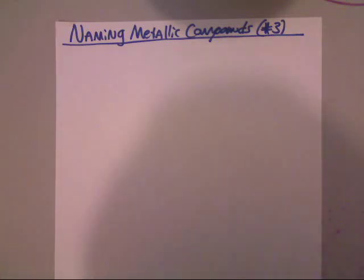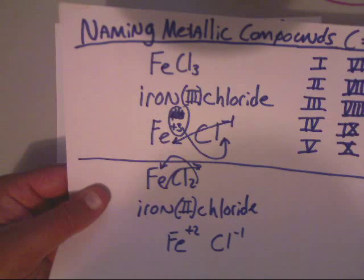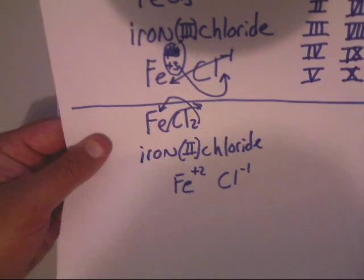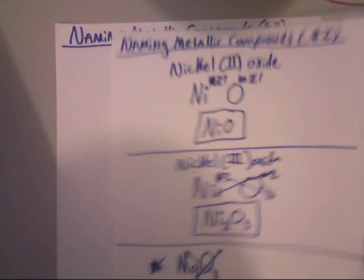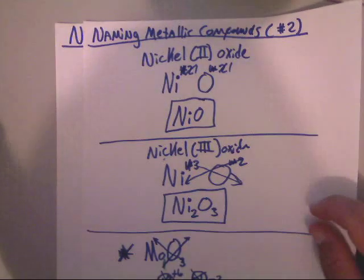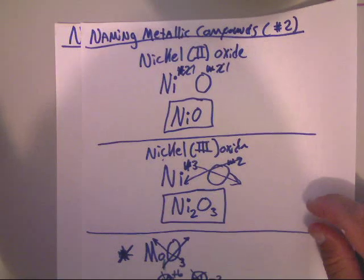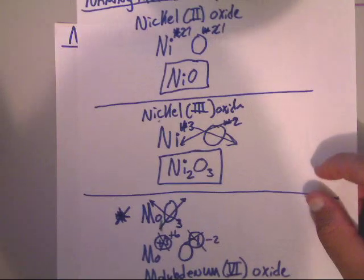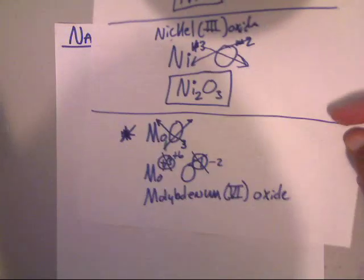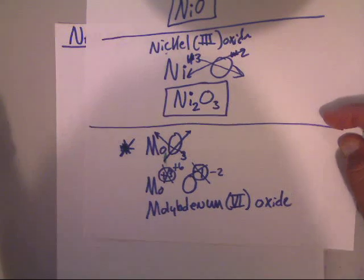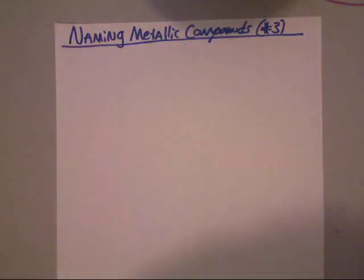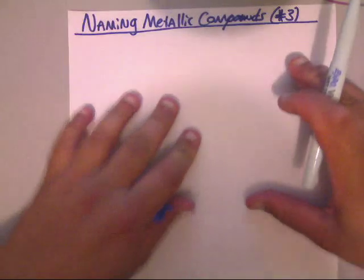Hi guys, welcome to the third video of naming metallic compounds. In the first video I showed you how to name iron(III) chloride and iron(II) chloride and how to write the formula. I also showed you in the second video how to name nickel(II) oxide, nickel(III) oxide, and molybdenum(VI) oxide. Now in this video I'm going to show you how to take the name and write the formula for more difficult problems.